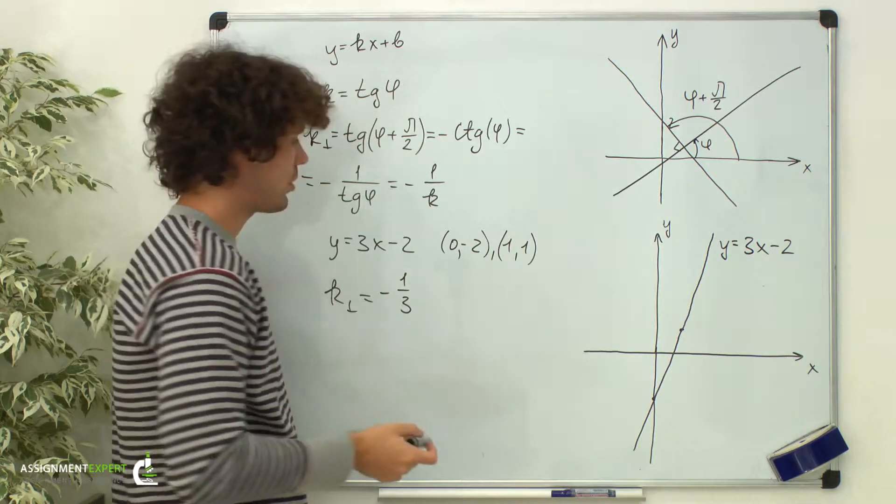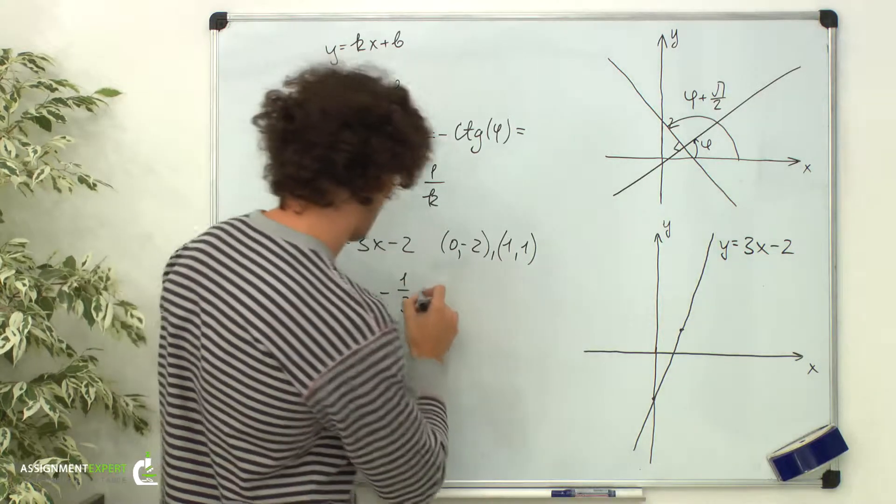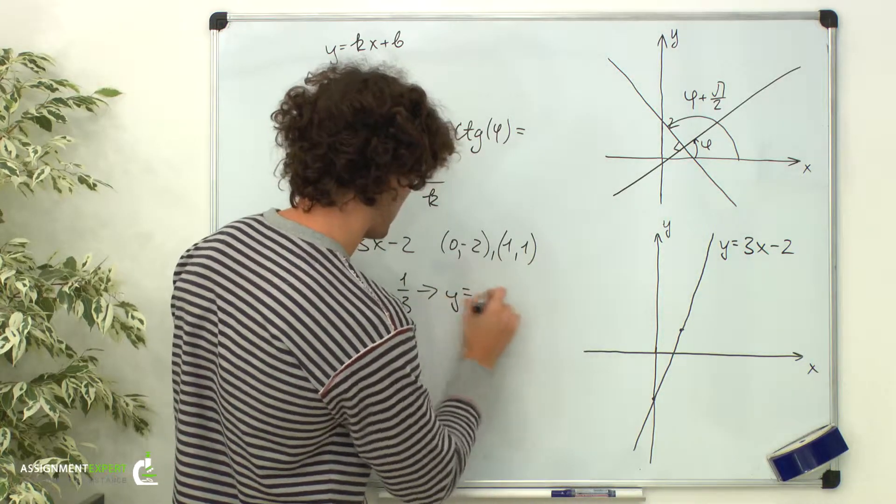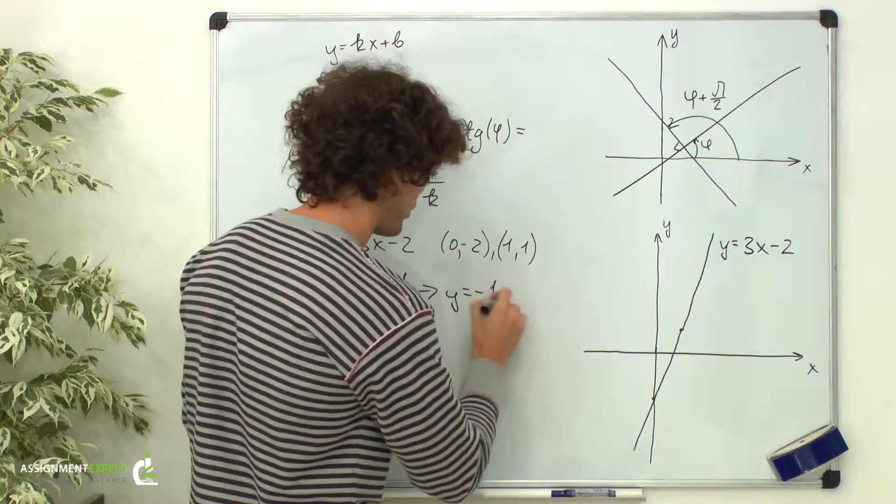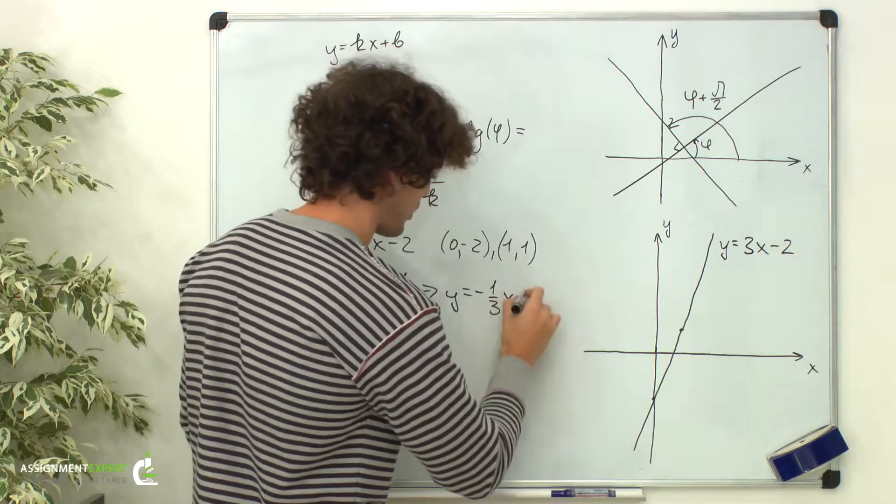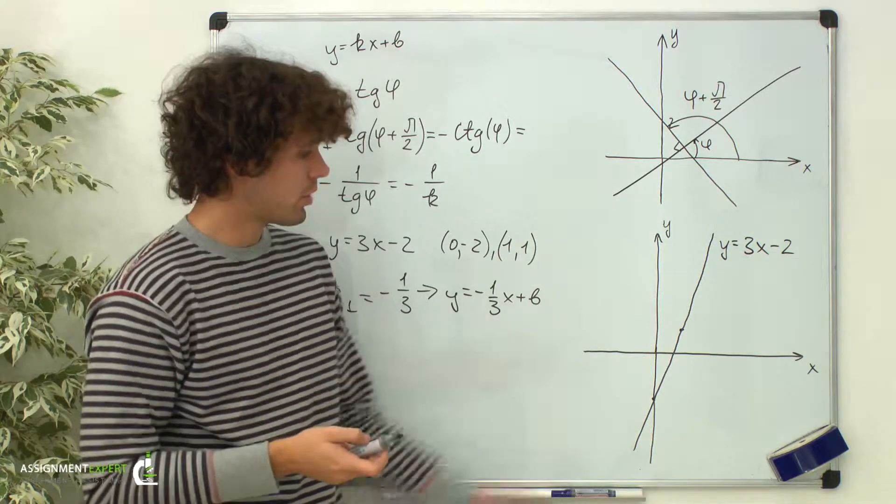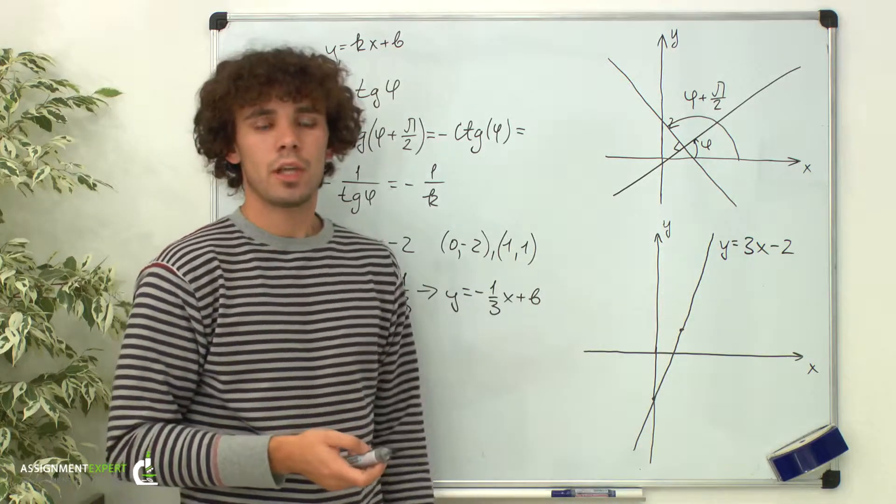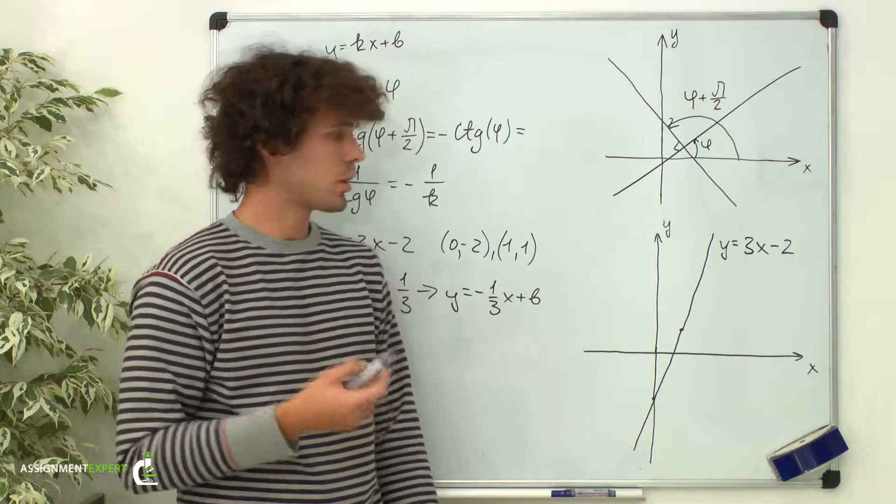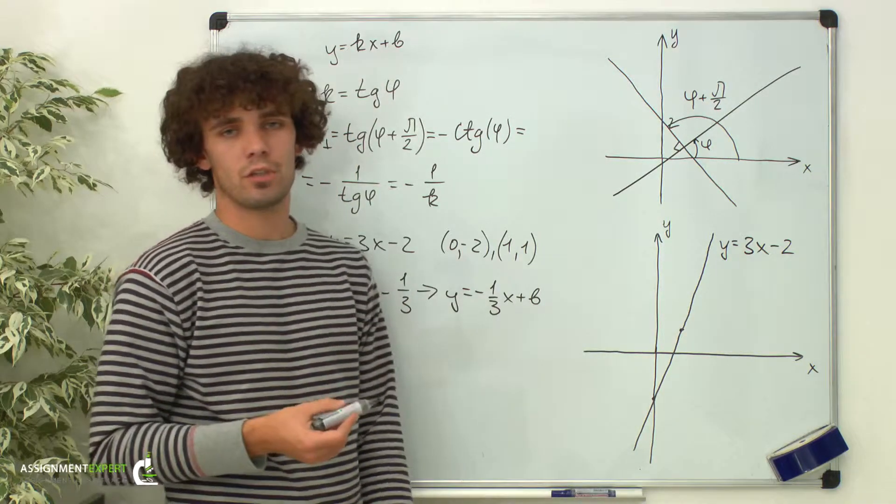So, the equation of the line perpendicular to that is y equals negative 1 third times x plus b. There is infinite number of lines perpendicular to the given, so we need to have at least one point, so we can exactly form the equation for the line.